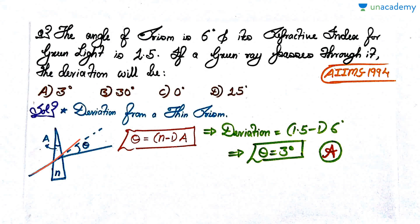For small angle of the prism A, theta can be simply written as (n-1) times A, where n is the refractive index which is 1.5, and A is the angle of the prism which is 6 degrees. On substituting this value, we get deviation equal to (1.5-1) times 6 degrees, so we get deviation equal to 3 degrees, which gives option A as the correct answer.